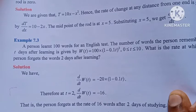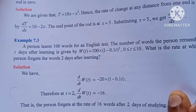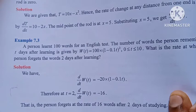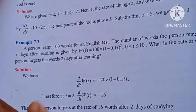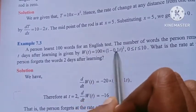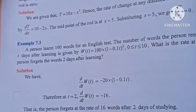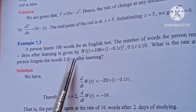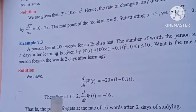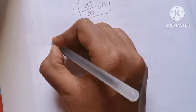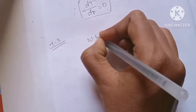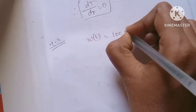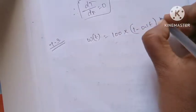So the question is: a person learns 100 words for an English test. After t days, in the range 0 to 10, we need to find the rate of forgetting. First, let's show the function. The function is W(t) = 100 into (1 - 0.1t) whole square.